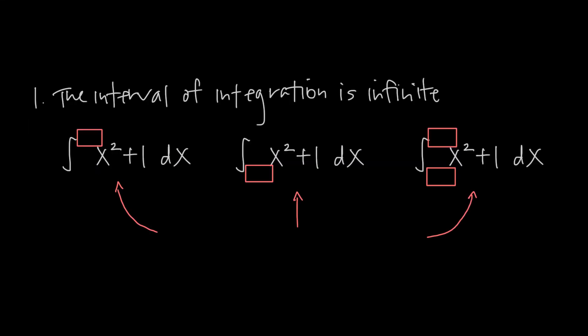Number one, an integral is improper if the interval of integration is infinite. This is the obvious case that we talked about before. The interval of integration is made up of the limits of integration. So if the lower limit is negative infinity, and or if the upper limit of integration is positive infinity, then the interval of integration is infinite.